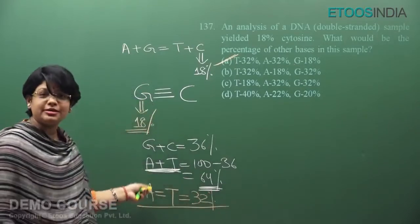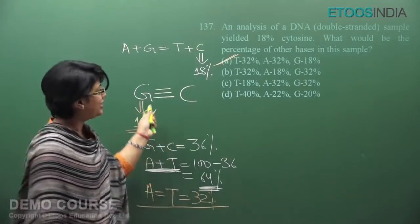So A is 32%, T is 32%, C is 18%, G is 18%. The answer is option A.